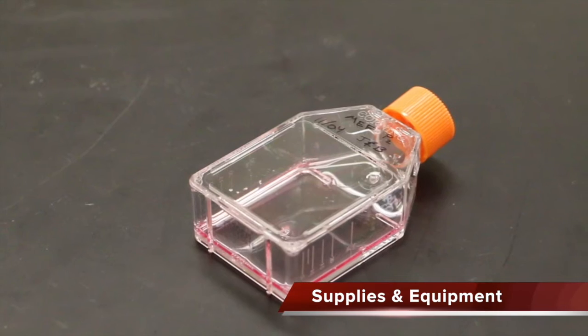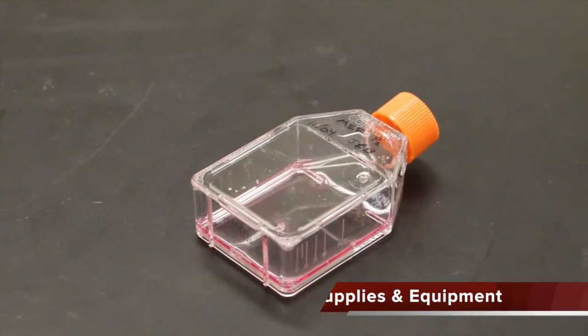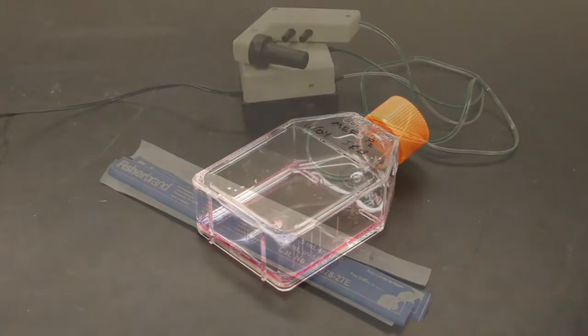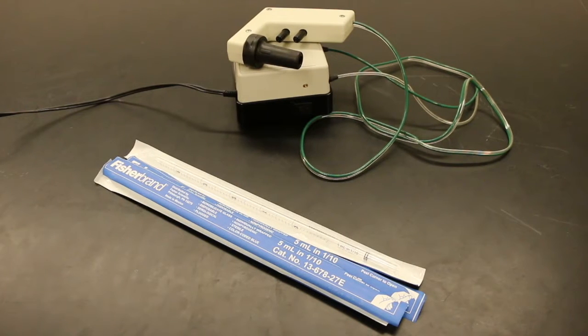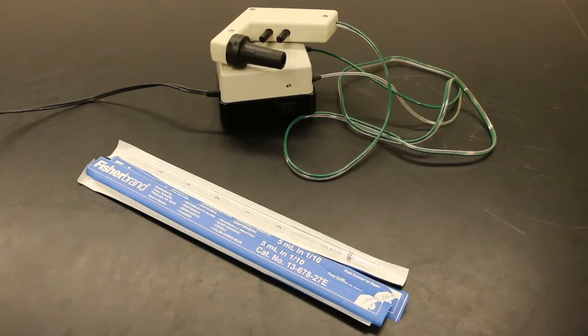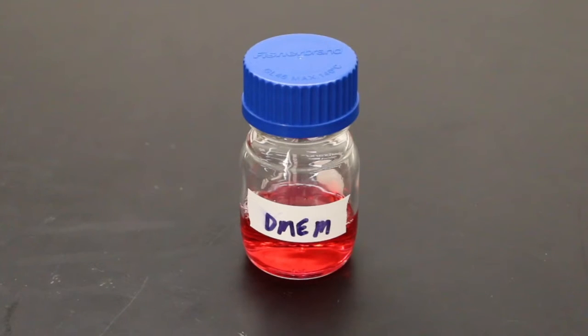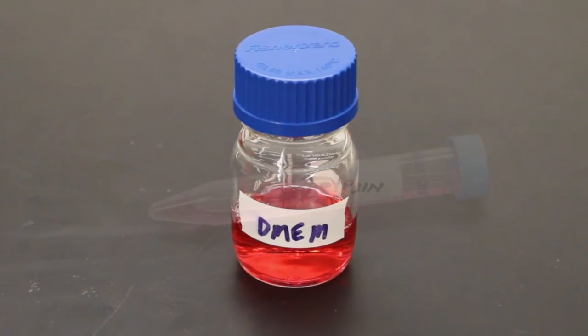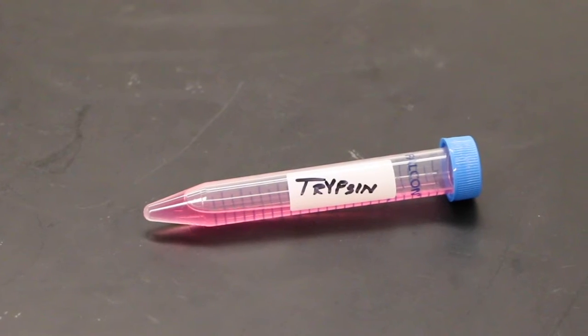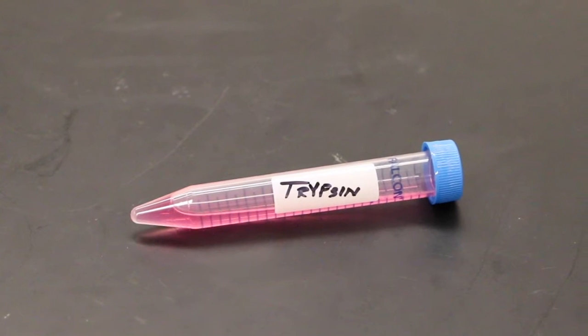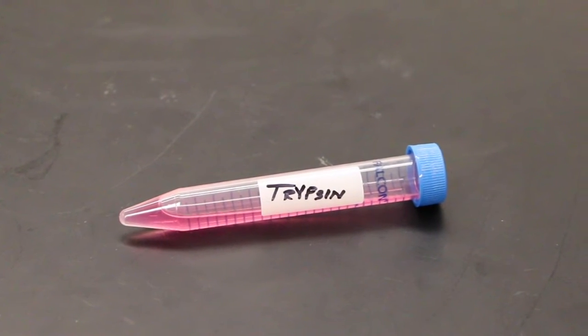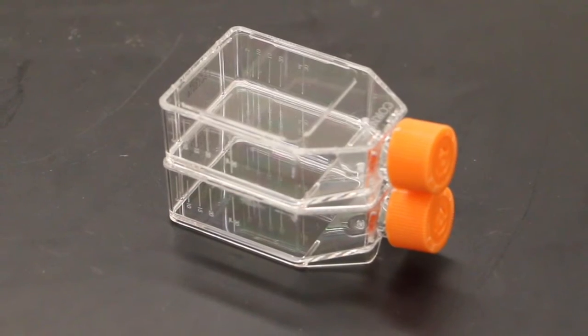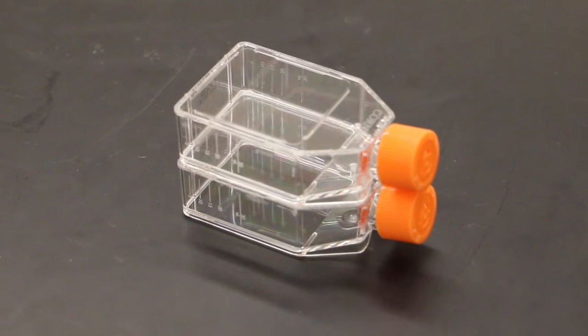For this procedure you will need some cells in culture that are in need of passaging, a pipette aid and a handful of glass pipettes (we'll be using 5ml size), the appropriate growth media for the type of cells you're growing, and a cell dissociation reagent (we'll be using trypsin).